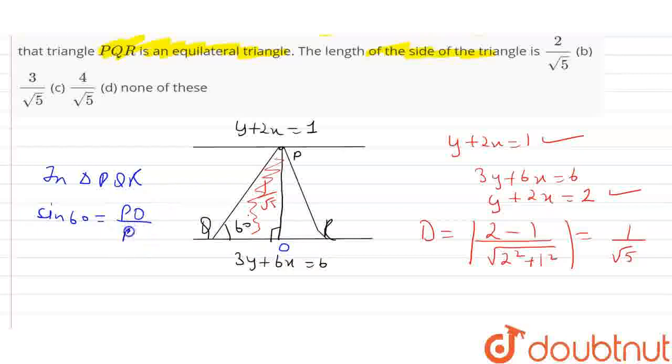PO upon PQ sin 60. And sin 60 is equal to root 3 upon 2 is equal to PO is 1 upon root 5 into PQ. Now from here PQ is equal to 2 upon root 15. And that is the value of the side of the equilateral triangle.